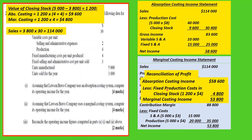This reconciliation could also have been done using unit costs. You would calculate the net income per unit and multiply by the number of units sold, then account for the difference in the same way. The reconciliation statement itself remains the same.